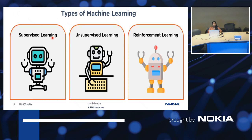We also have speech recognition as a supervised learning example — like Google Assistant and Siri, which work on voice commands to replay or perform tasks. Next is unsupervised learning, where we don't have labeled data. For example, when you shop on Amazon, it shows products frequently bought together — without any labeling, it clusters patterns and advises you on further shopping. That is one example of unsupervised learning.